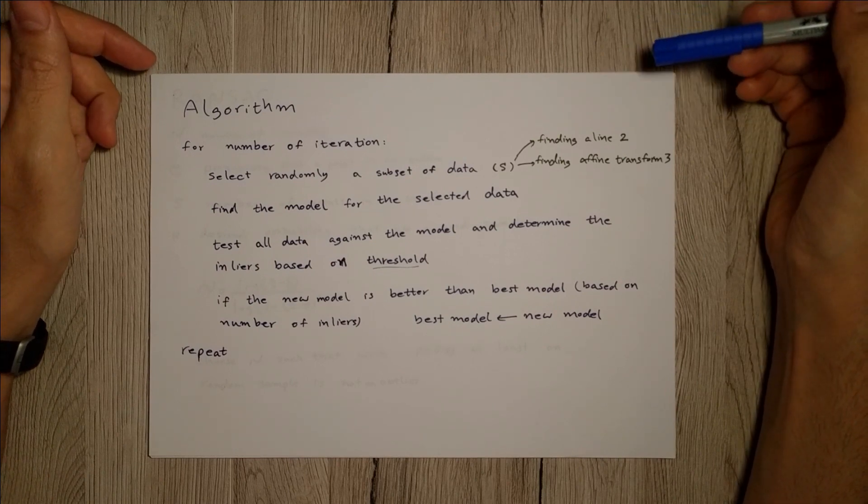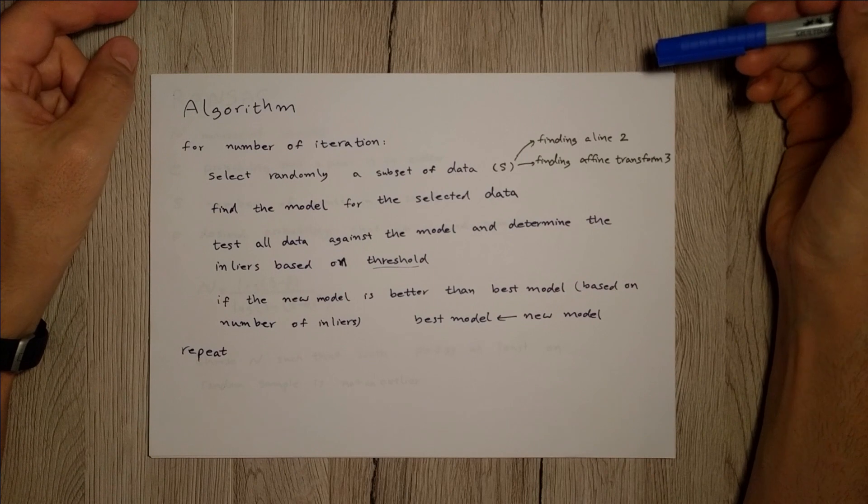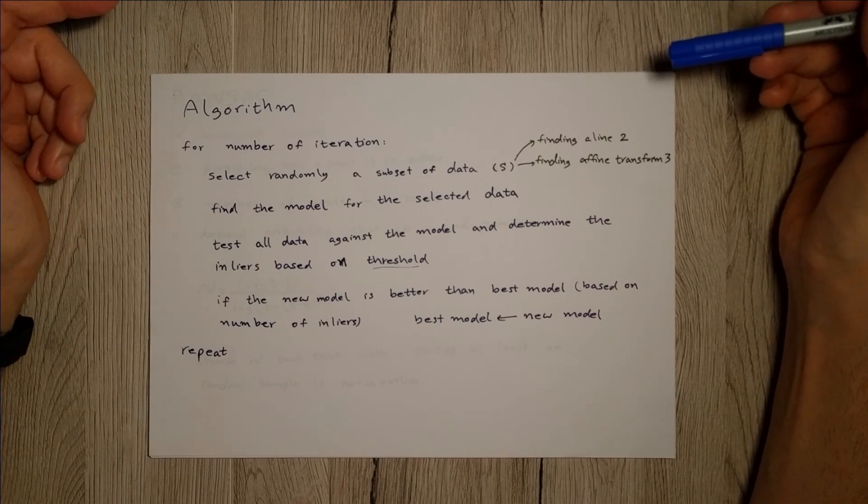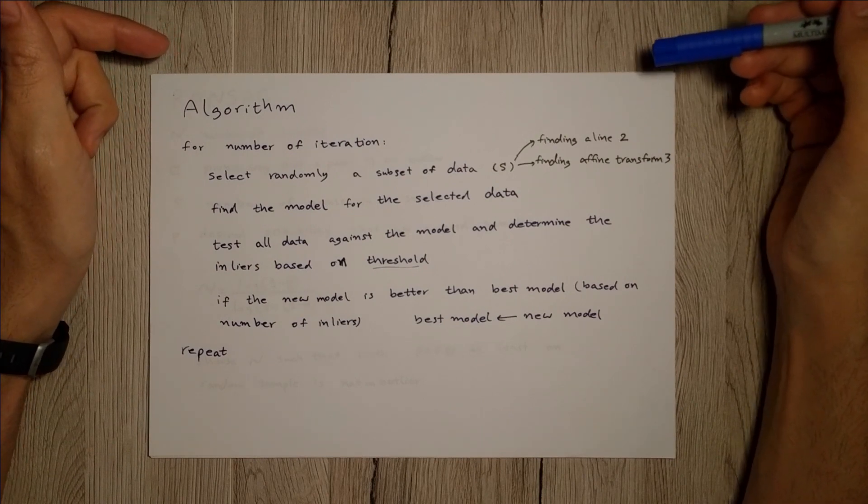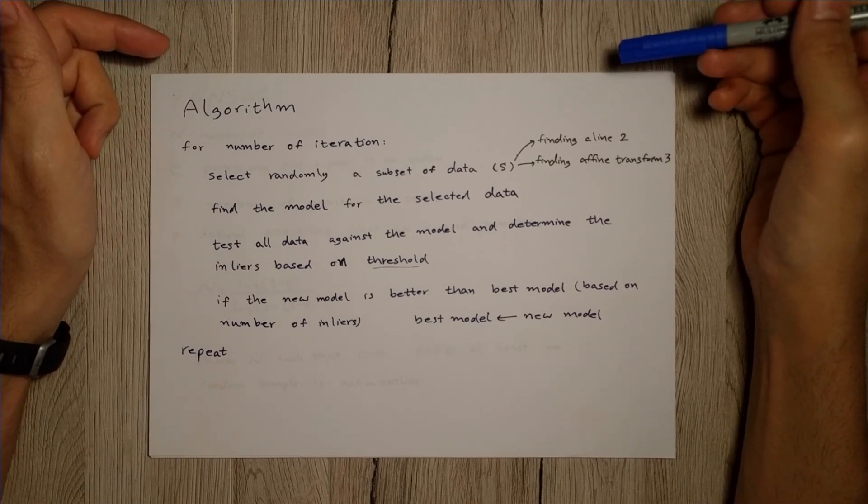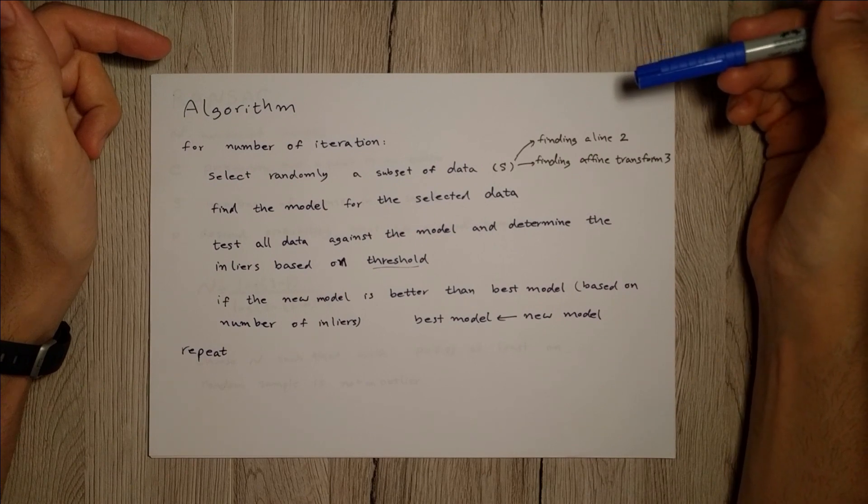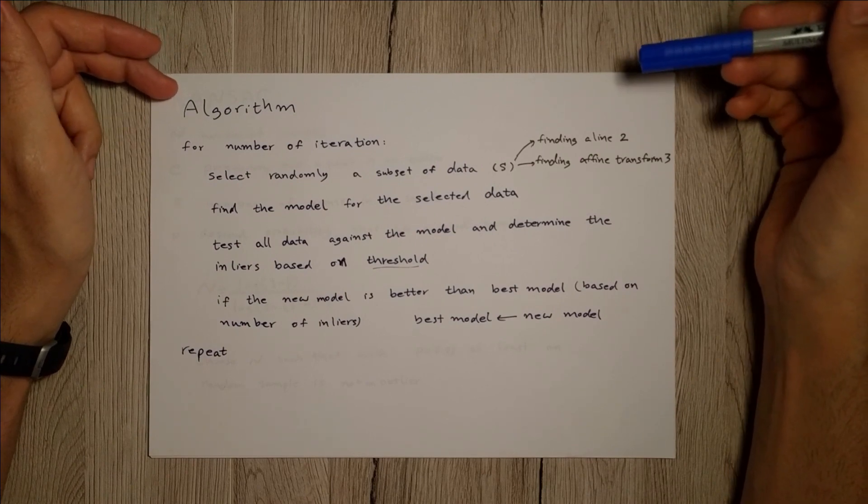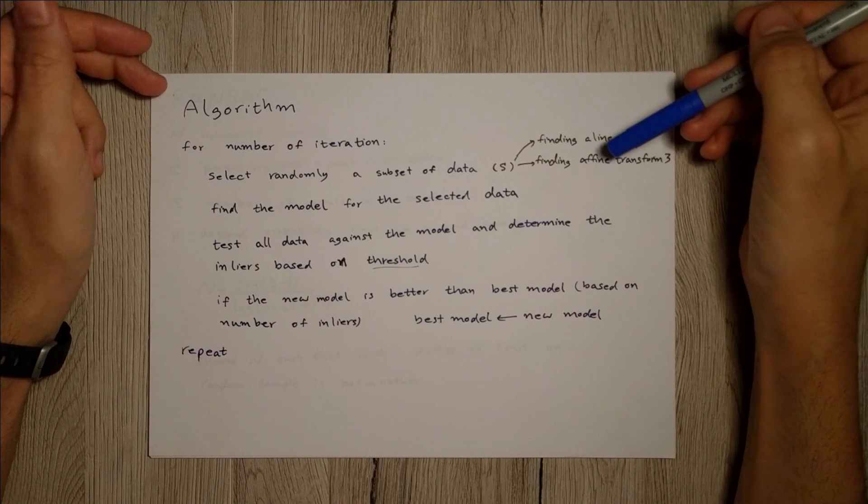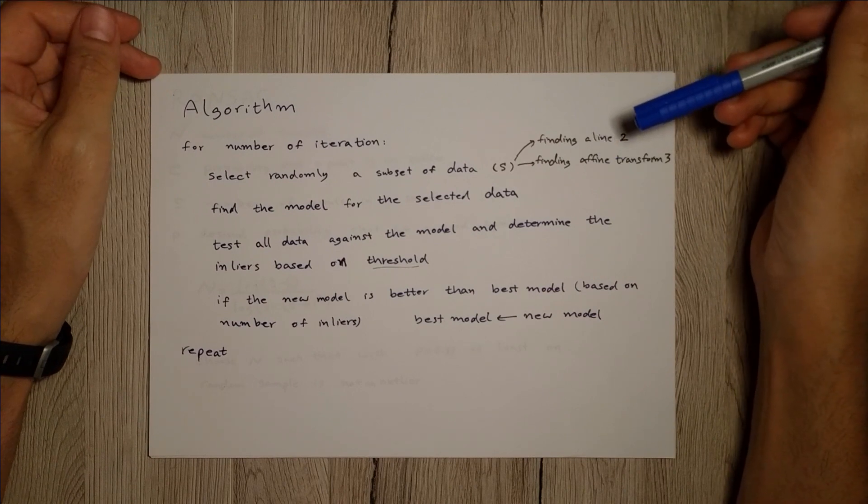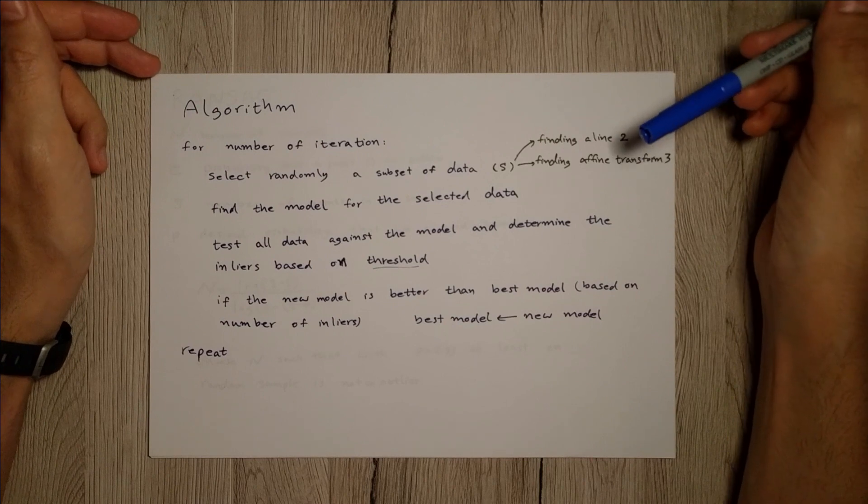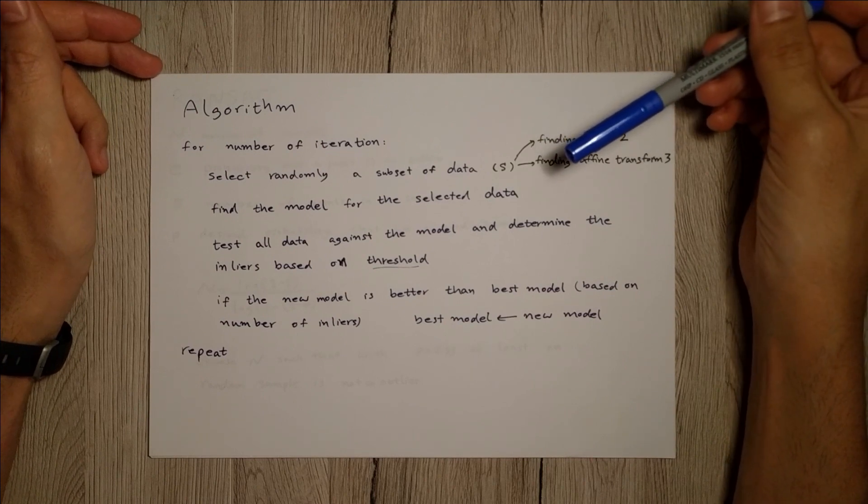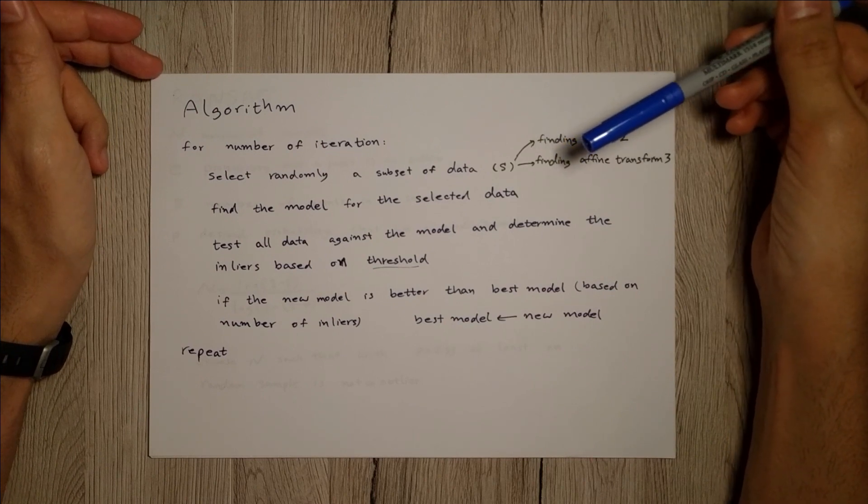If you want to find an affine transformation, you need three pairs of points. If it's a homography, it's four. So it's totally dependent on the problem that you're solving. After selecting randomly your data, you have to fit the model for the data.